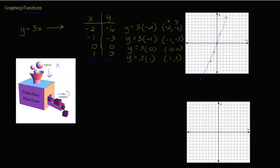Let's do another one: y equals x minus 3. We have our input X, our function formula x minus 3, and our output Y. Let's try negative 2: y equals negative 2 minus 3. Remember, subtracting is adding the opposite, so minus 3 is the same as adding negative 3.